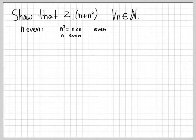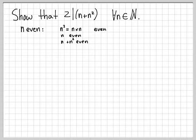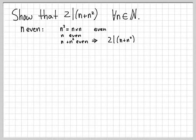When n is even, then n is even. So the quantity n plus n squared would be the sum of an even number plus an even number, which is an even number. So when n plus n squared is even, then obviously two can go into it, so we can easily conclude that two does divide n plus n squared.